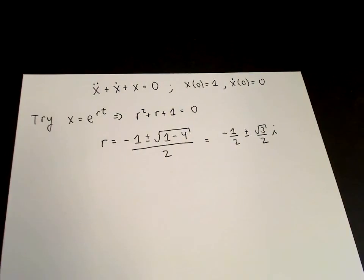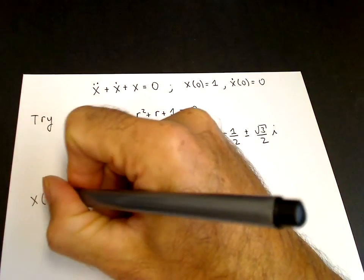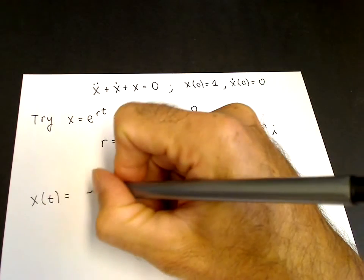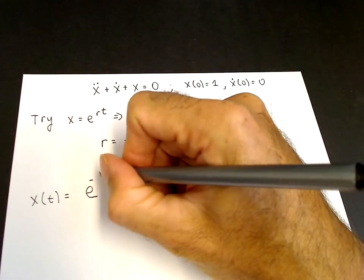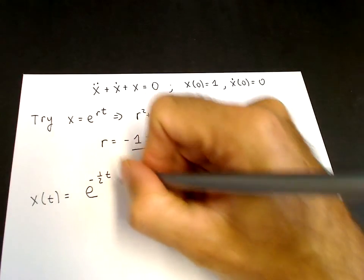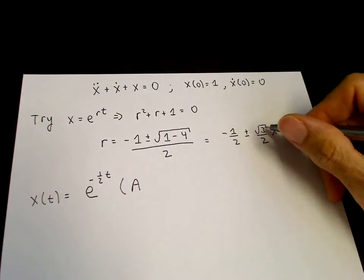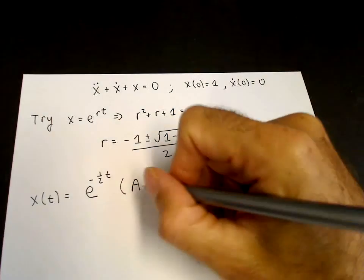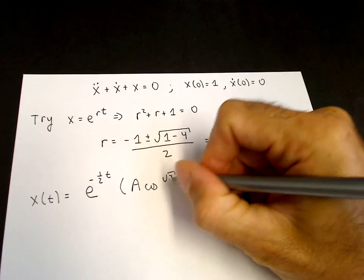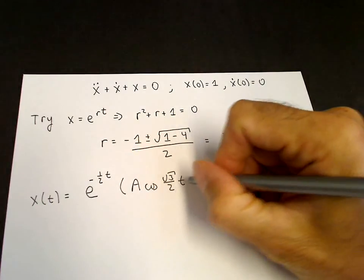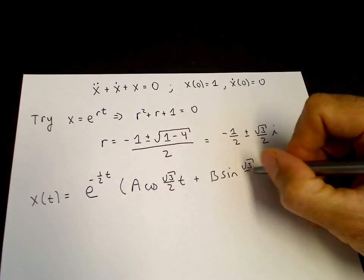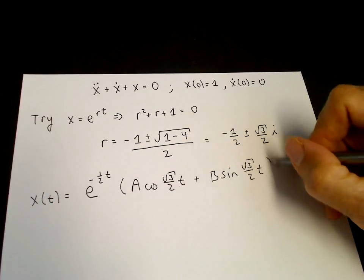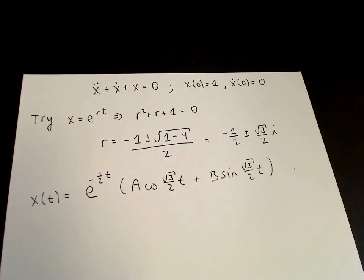We can write down the solution. x of t equals e to the lambda t — lambda is minus one half — so e to the minus one half t times a cosine mu t plus b sine mu t, where mu is root 3 over 2. So x of t equals e to the minus one half t times a cosine root 3 over 2 t plus b sine root 3 over 2 t. That is the general solution.